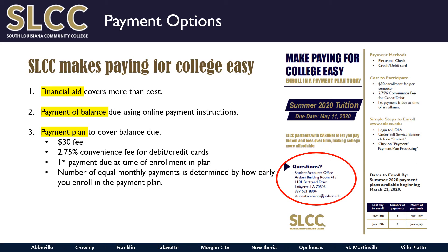This next slide is an example of the Payment Plan Flyer that is published each semester, outlining the details of payment plans offered for the current semester. The payment methods accepted are debit or credit card or electronic check. There is no charge to pay by electronic check. An electronic check functions like a direct debit from your bank account. To process a payment by electronic check, a physical check is not needed.